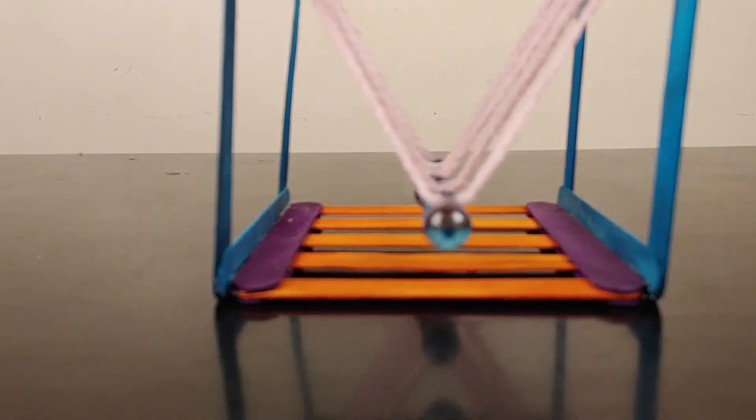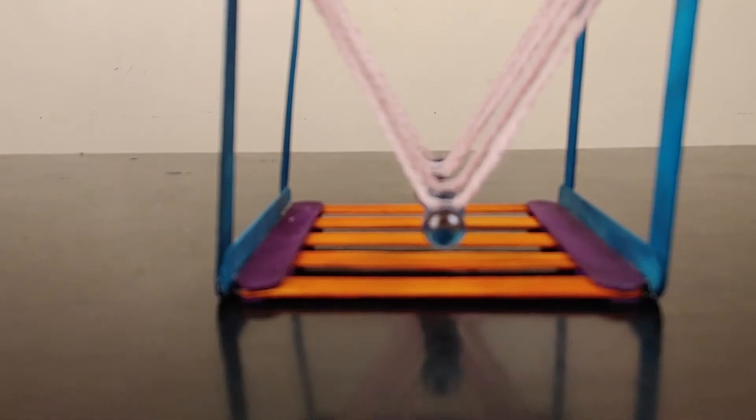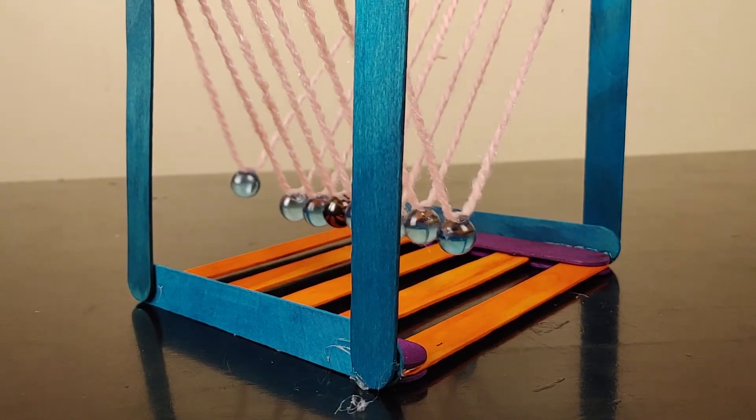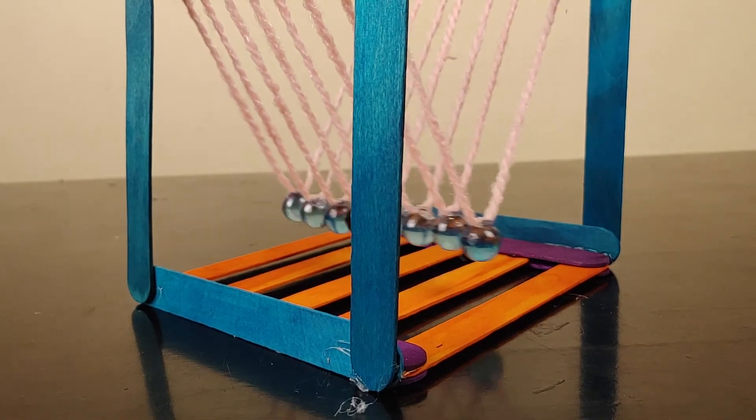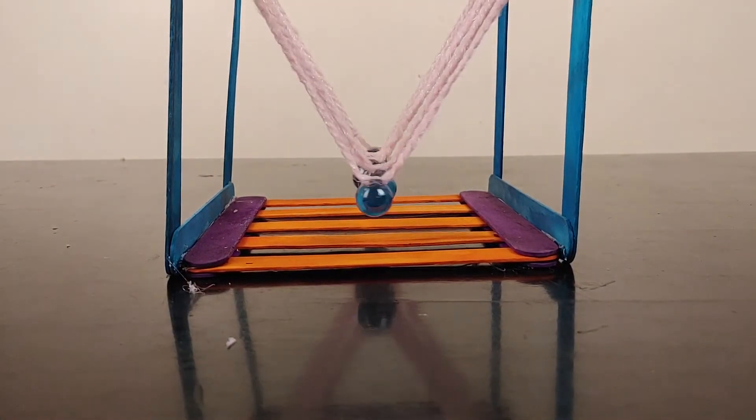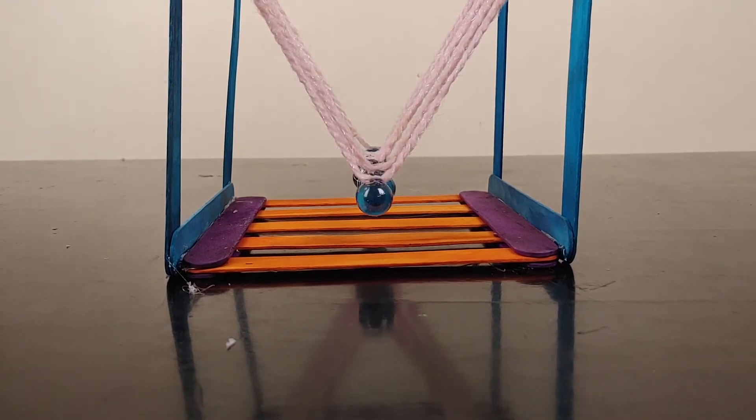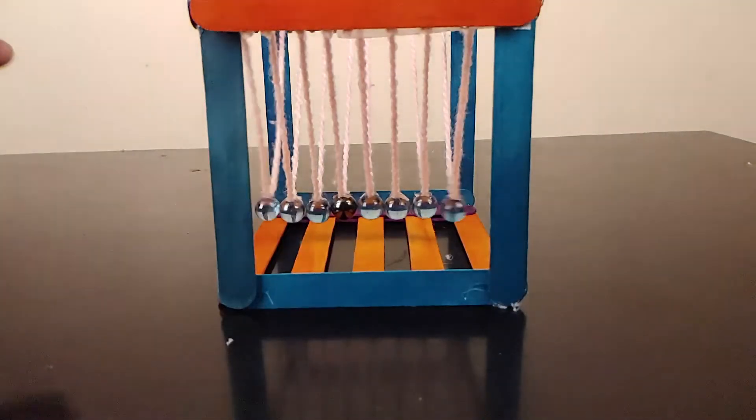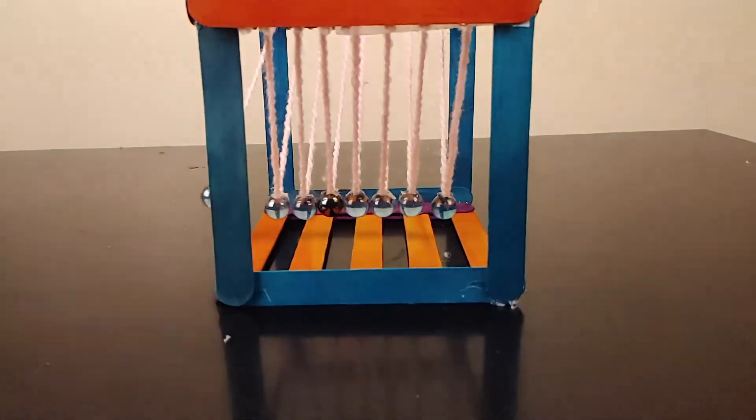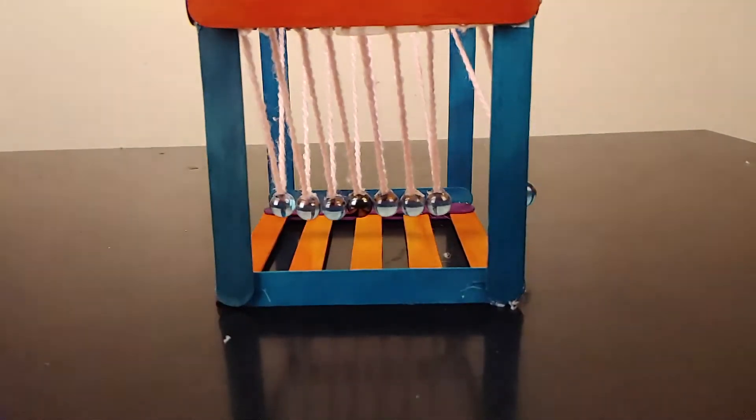Newton's cradle is a device that demonstrates the conservation of momentum and the conservation of energy with swinging marbles. When one marble at the end is lifted and delivered, it strikes the stationary marbles, transmitting a force through the stationary marbles that pushes the last marble upward. The last marble swings back and strikes the nearly stationary marbles, repeating the effect in the opposite direction.